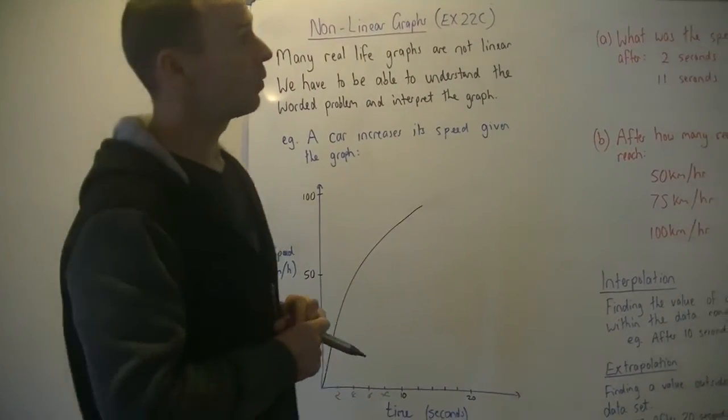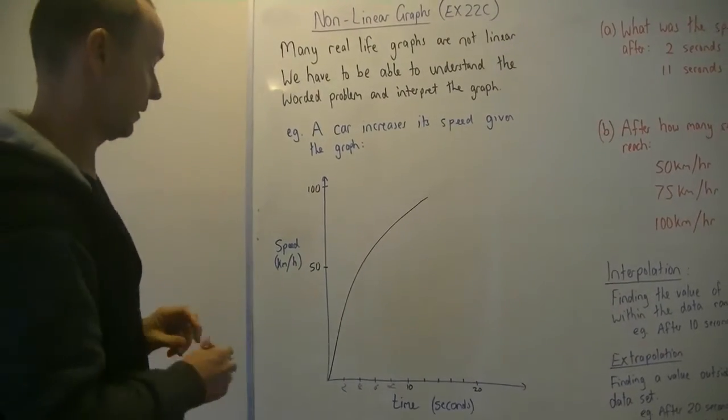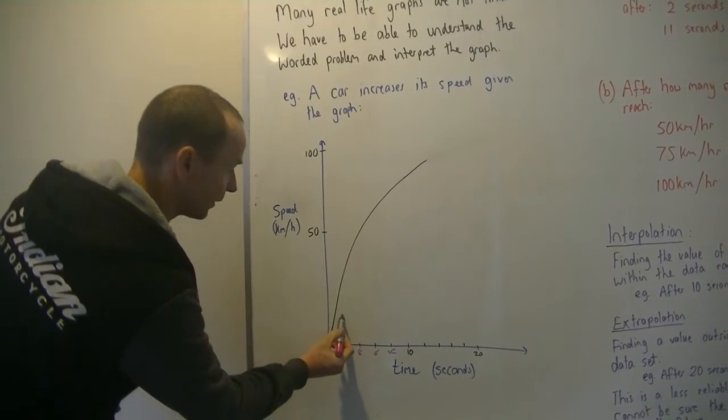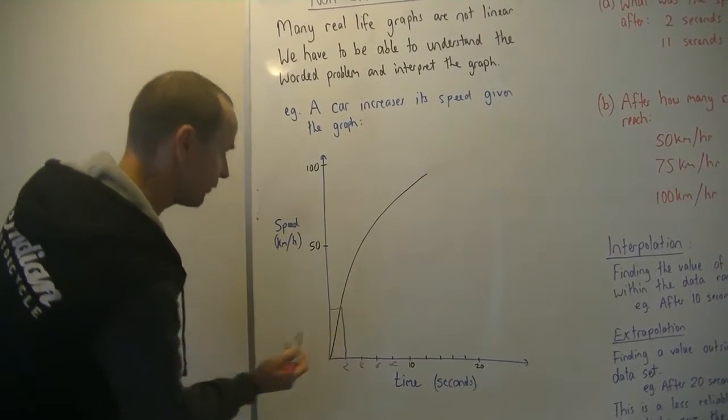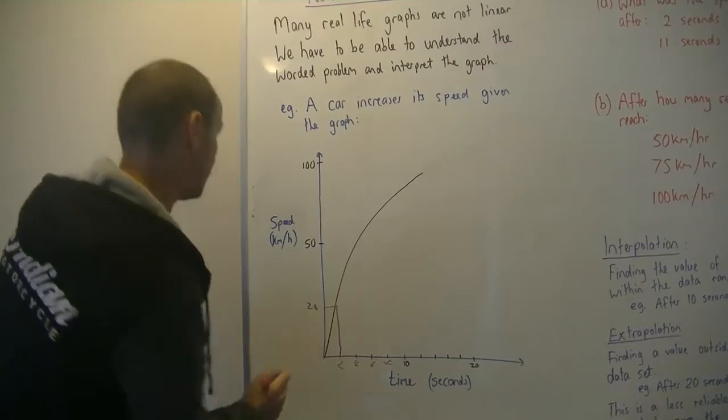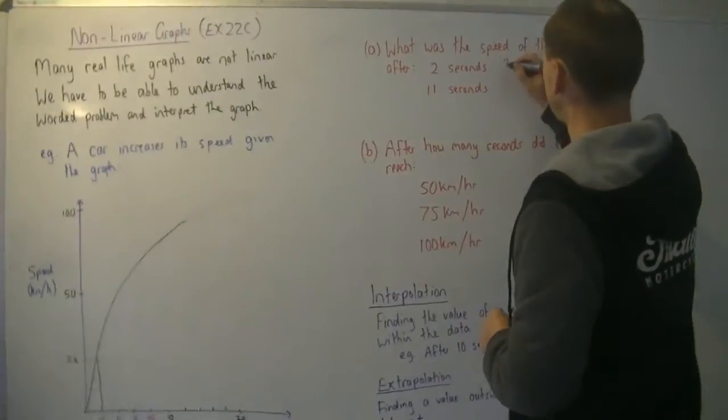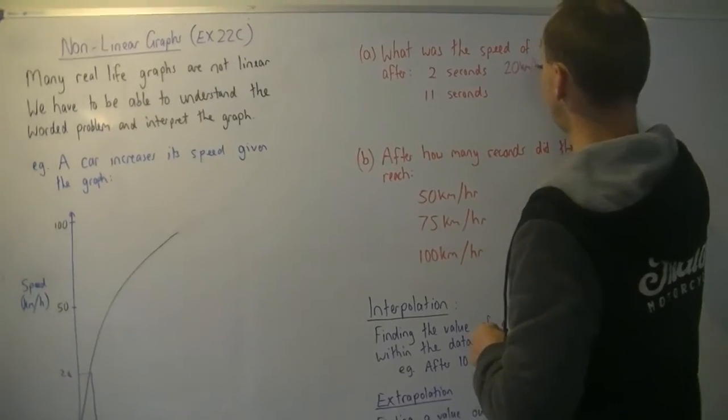Alright, so the first question, what was the speed of the car after 2 seconds? So that's pretty straightforward. You look here at 2 seconds as accurately as you can. You go up and across and I'd say that's roughly 20 kilometres per hour. So I'm going to write it up here, it is 20 kilometres per hour.